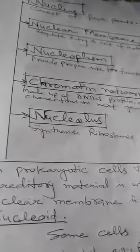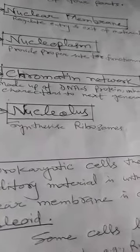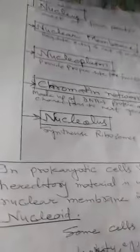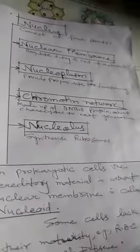Generally, the number of nuclei is single. That means one nucleus present in one cell. But sometimes it is more than one. For example, in paramecium it is two in number, and in our muscular cells it is many in number.